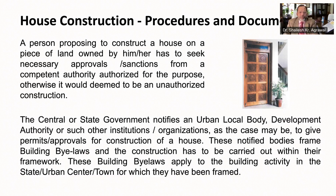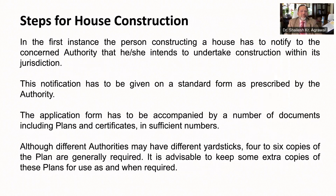Second would be on various terminologies used in house construction. Once the owner has an encumbrance-free land, he or she has to seek necessary approvals and sanctions for building a house from the competent authority. Generally, the central government or state government notifies an urban local body or development authority or any other institution or organization to give permits or approvals for construction of a house. These bodies in turn frame building bylaws and notify them, and house construction needs to be done within the framework of these building bylaws.